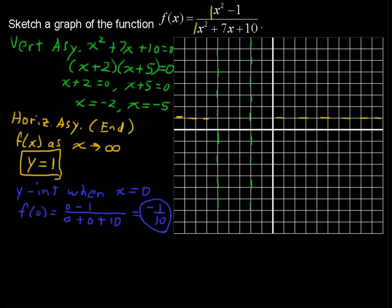I'm going to put this in orange because this is part of the graph, negative 1 tenth. I'm exaggerating the point here because I just want to remind ourselves that the graph will go through that point.